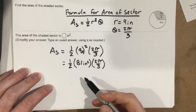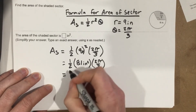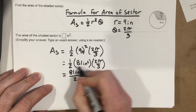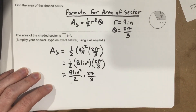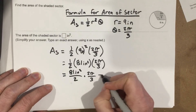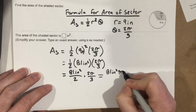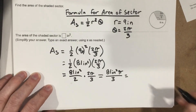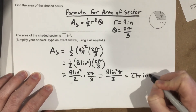We need the exact answer, so I can't just plug that into the calculator; I have to simplify. Writing it out: one-half times 81 inches squared times 2π over 3, which gives 81 inches squared over 2 times 2π over 3. The 2's cancel, leaving 81π inches squared over 3. Simplifying 81 divided by 3 gives 27, so the answer is 27π inches squared.